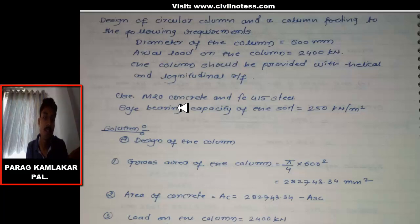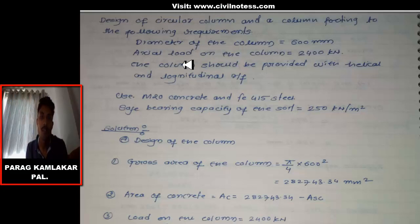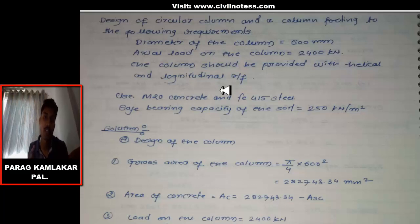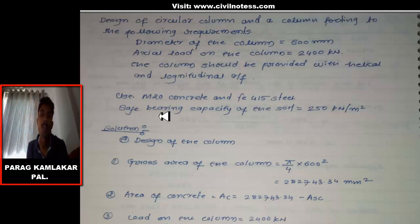This is all the given data for our design of the circular column. The diameter of the column is 600 mm, the axial load on the column is 2400 kN. The column should be provided with helical and longitudinal reinforcement. We need to use M20 grade of concrete and Fe415 for steel. The safe bearing capacity of the soil is 250 kN per meter square.